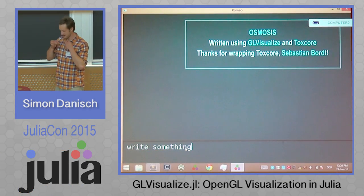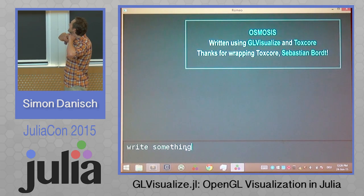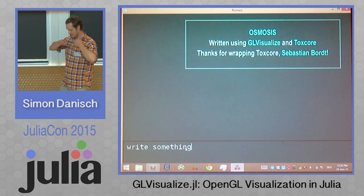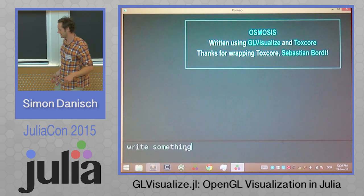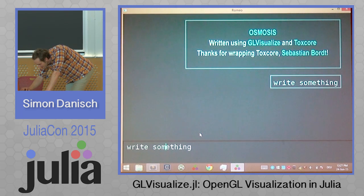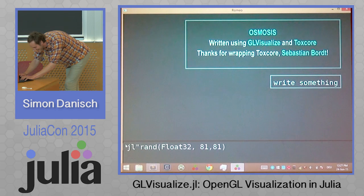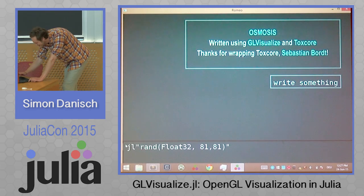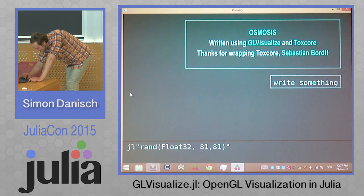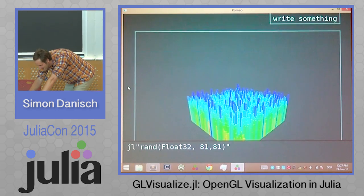It's using ToxCore — ToxCore was written by a friend of mine and it's a decentralized messenger API. It's really cool, it's encrypted and all this, and this messenger has all the basic functionality of any messenger. But you can also execute Julia statements, which is pretty crucial for any messenger. And it will try to visualize the last statement. So this is a really rough prototype and I hacked it together in the last days.